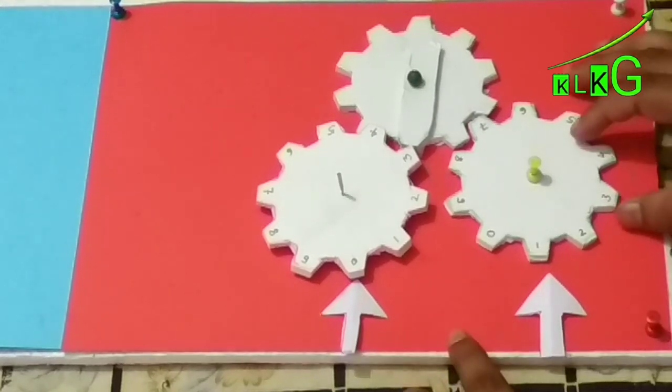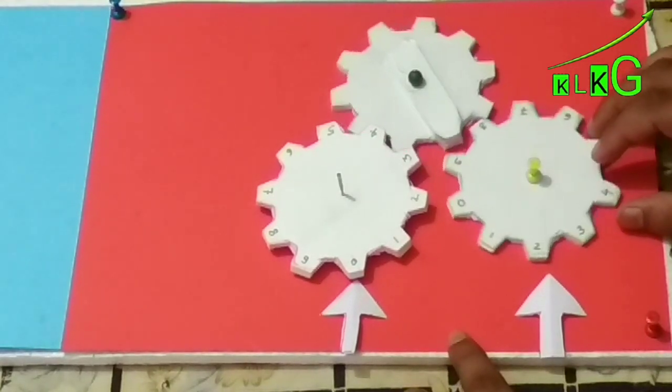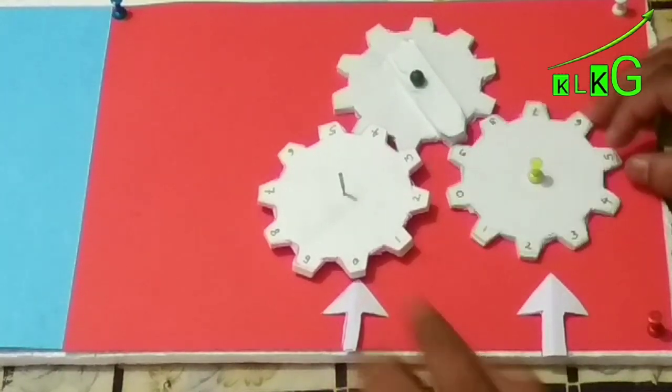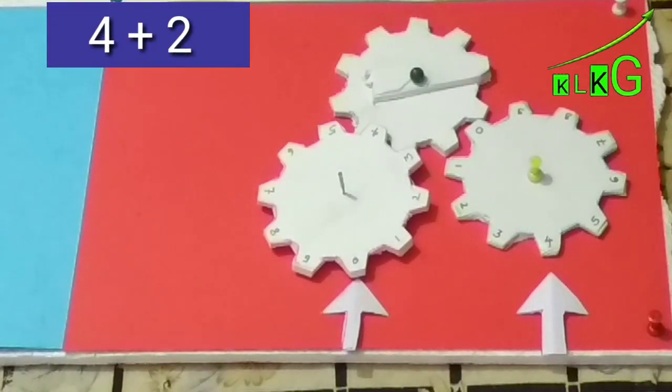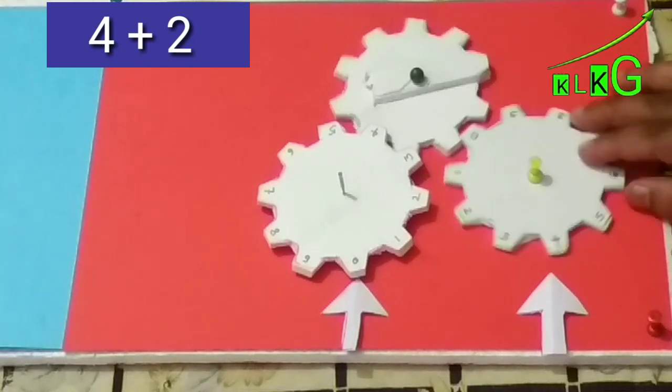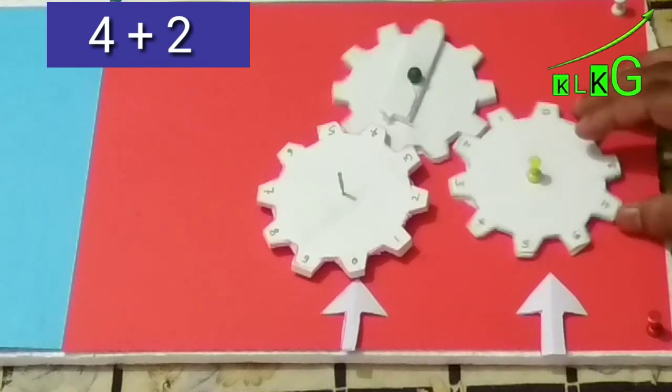Now see our addition machine is ready to work. Now we will add four plus two. So first we have to go for four: one, two, three, four. And then we have to add two, so next again two times we have to rotate. So we get the answer six.